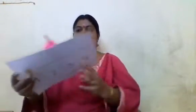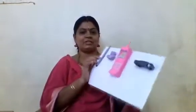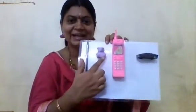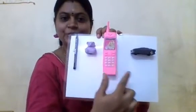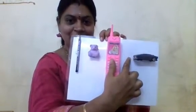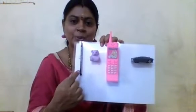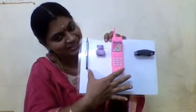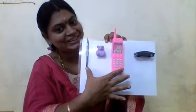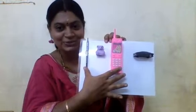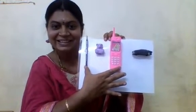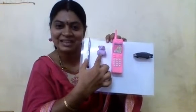See, there is a pencil, teddy bear, toy phone and a toy car. Now we are going to find what is between pencil and the phone. What is there between pencil and the phone? Can you all try to find what is there between the pencil and phone? Yes, there is a teddy bear.